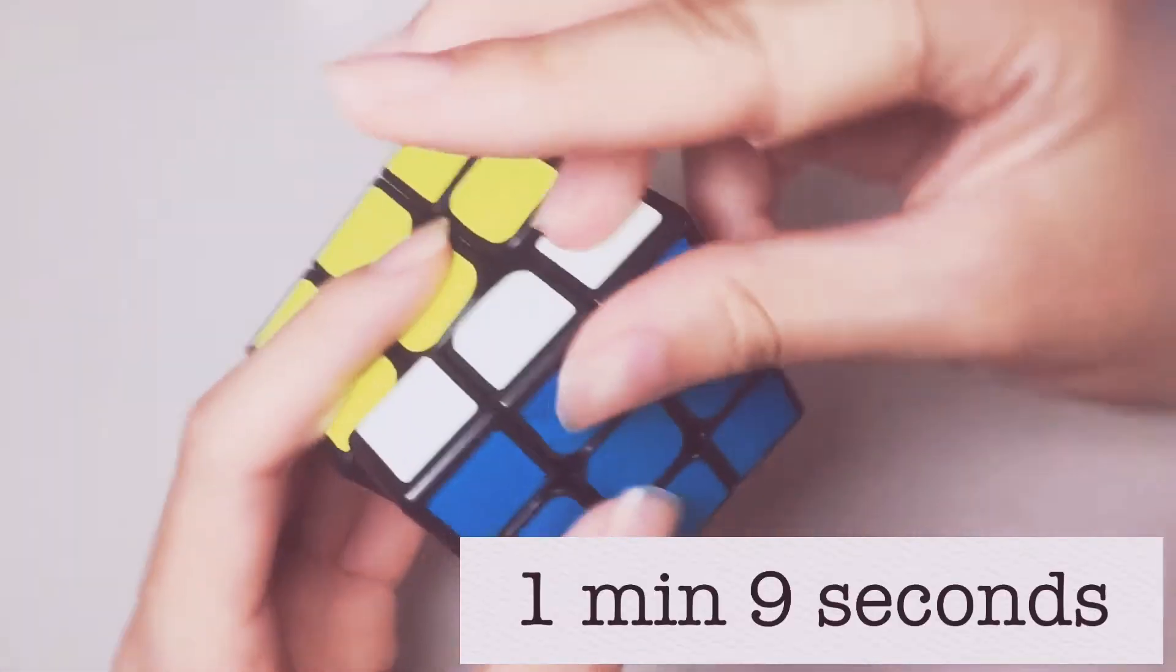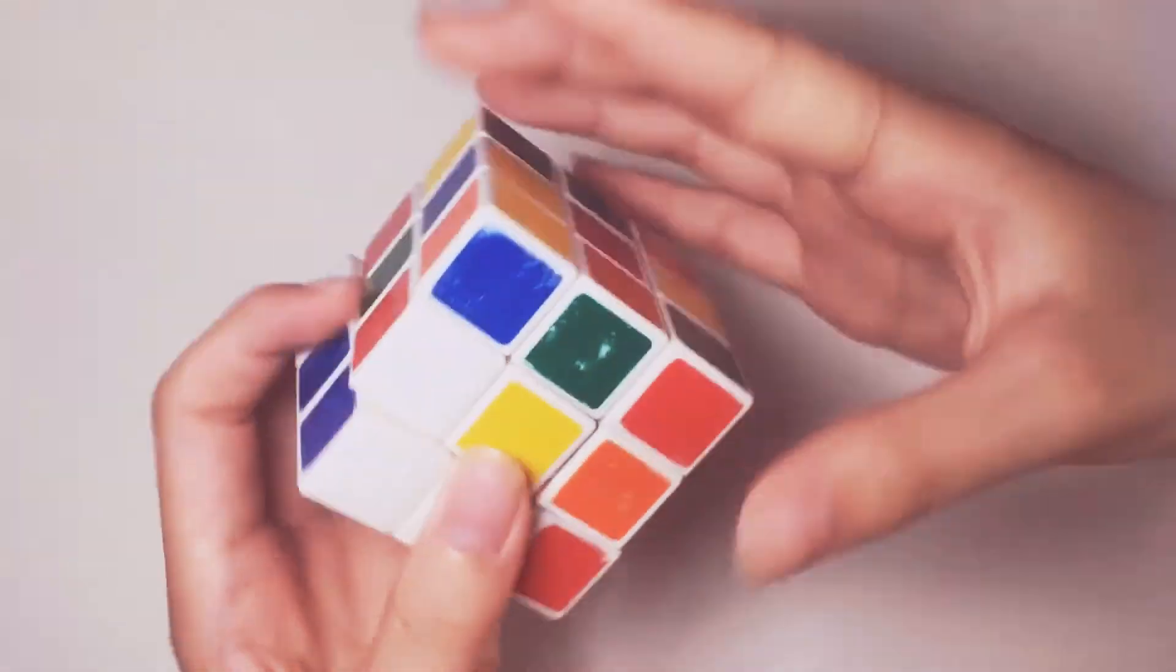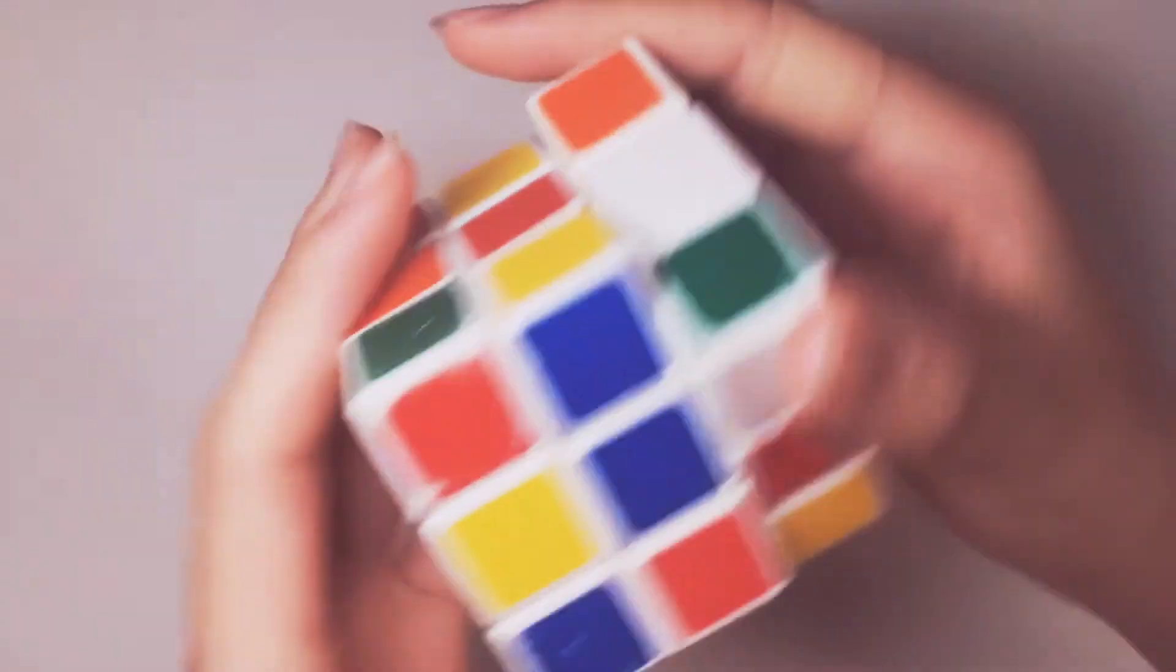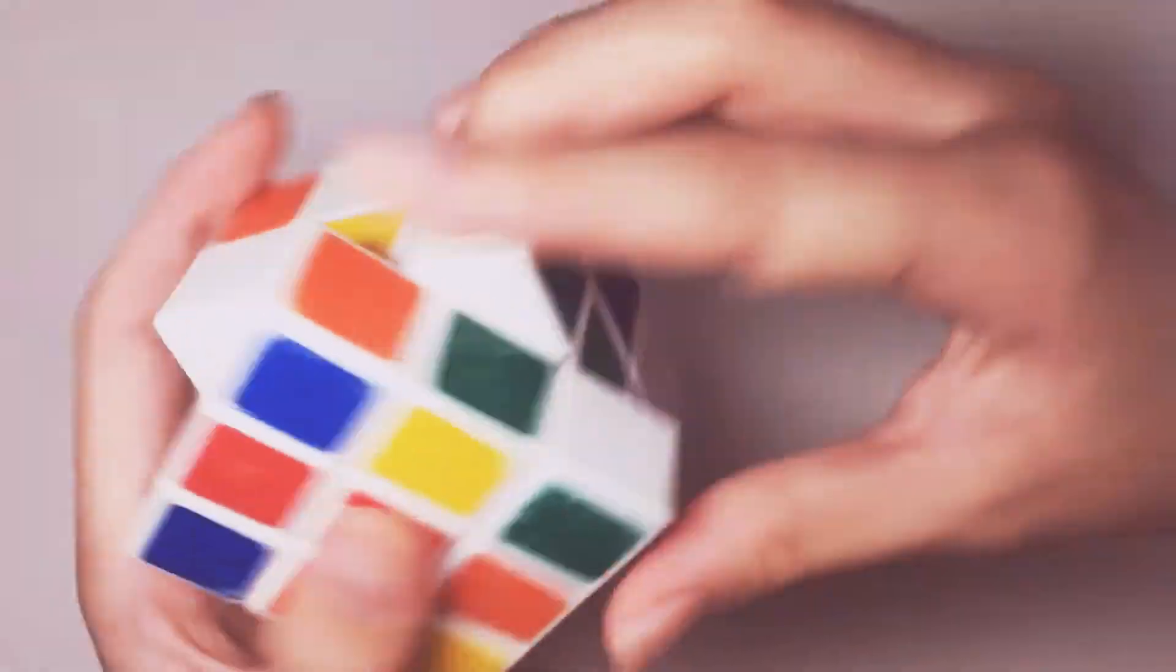So that is all for this first Rubik's cube and I solved it in 1 minute and 9 seconds. Now on to the next cube which I already messed up and now I'm going to be solving it.